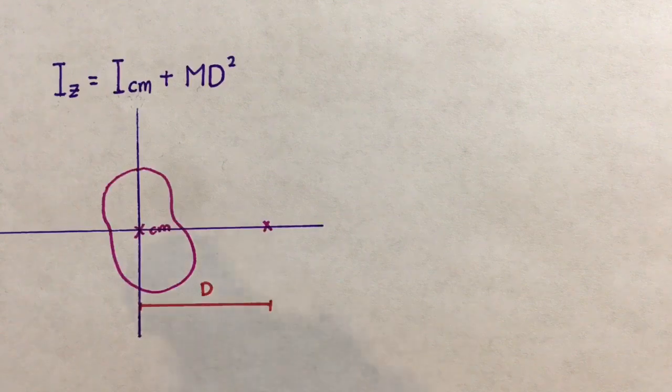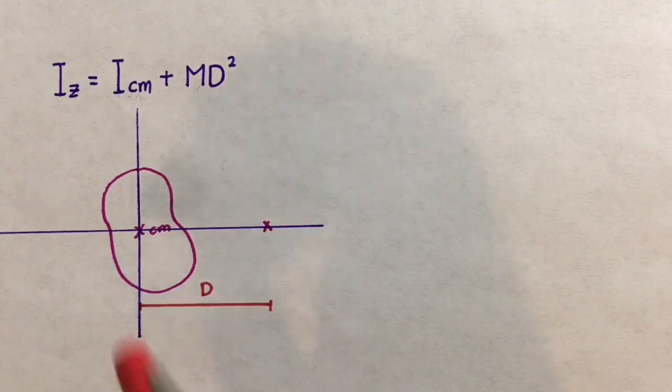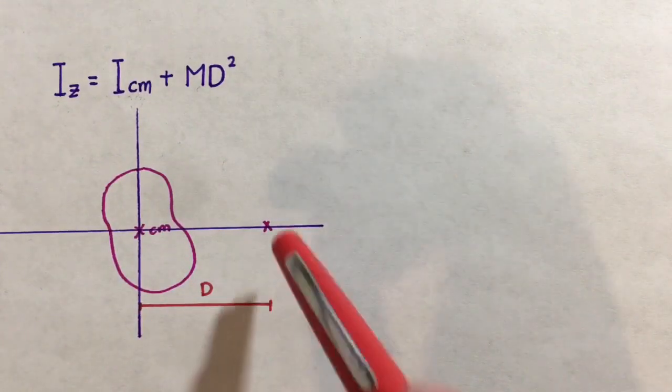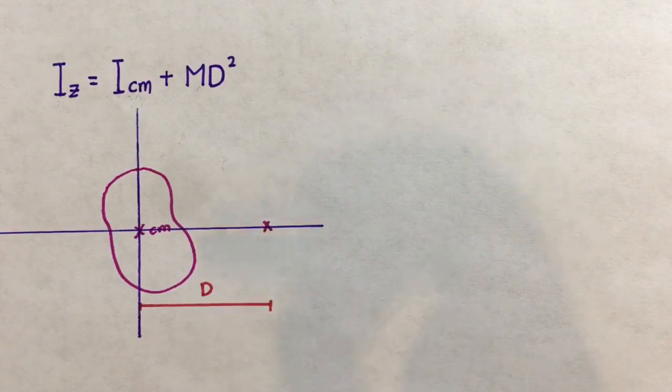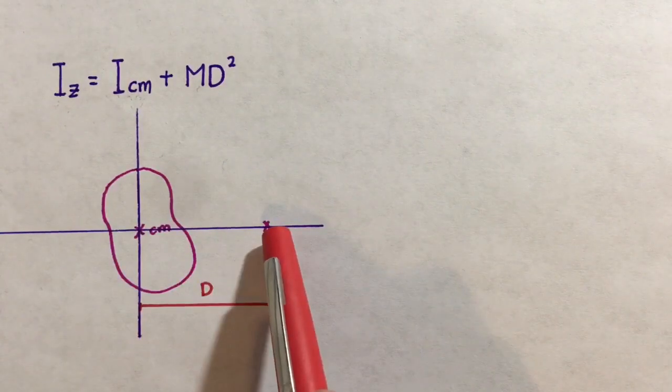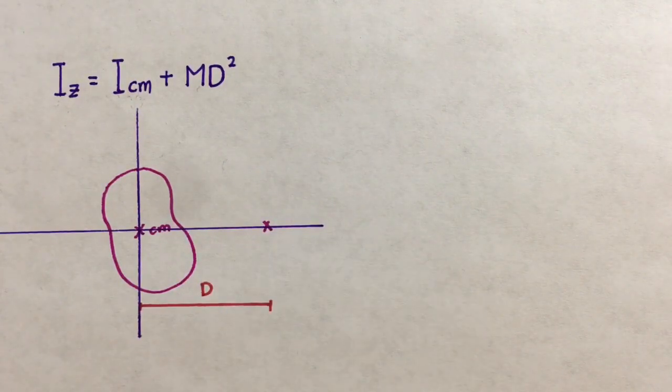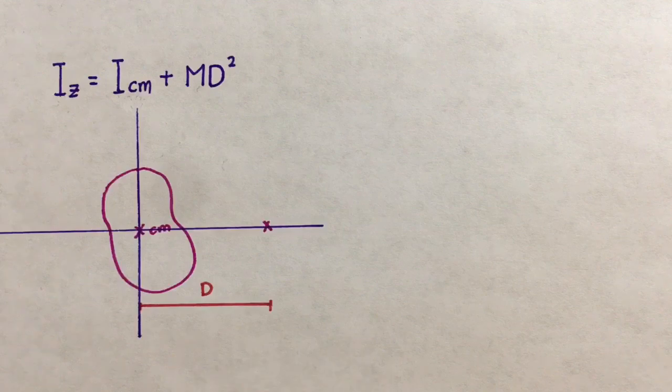Our new axis will be located a distance D away from the original axis. Notice how the original axis of rotation goes into and out of the page, and the new one also goes into and out of the page. Therefore, these two axes are parallel to one another, and so this satisfies the criteria for the parallel axis theorem.